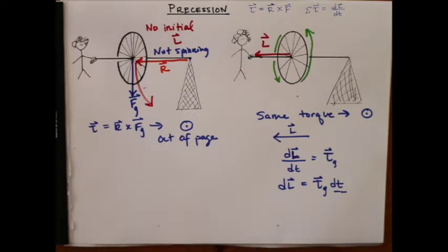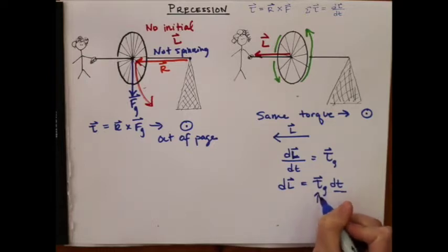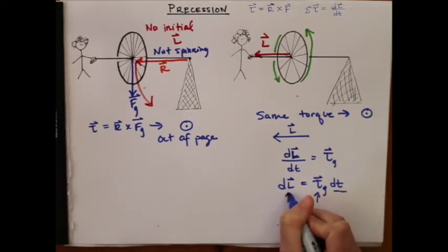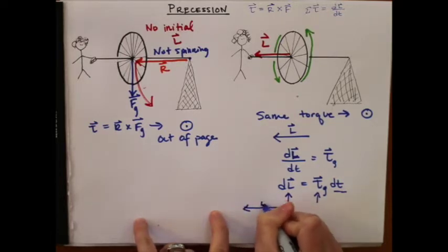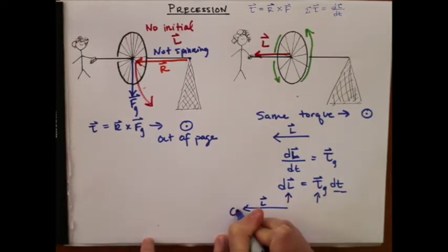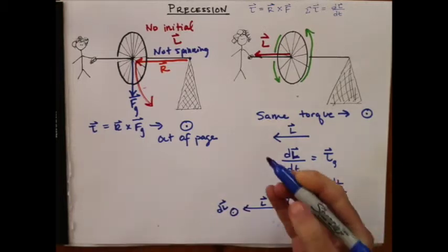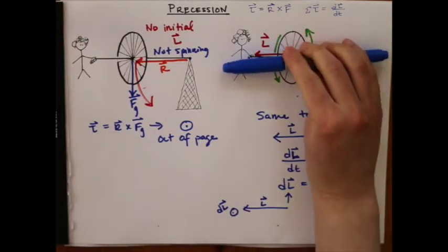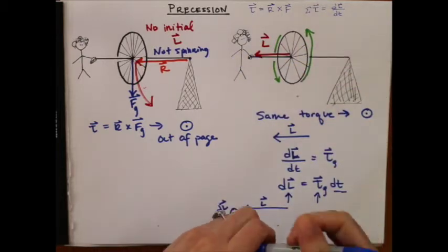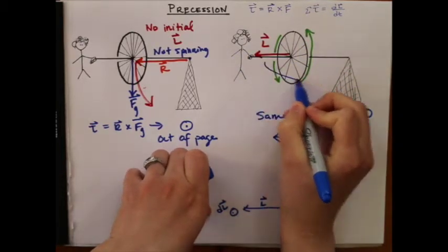So what direction will that be? Well, since the direction of the torque is out of the page, the direction of the dL is out of the page. So we have our initial angular momentum, and we're adding a little dL that's out of the page, which means that the wheel is going to rotate this way. So it'll go around like this.